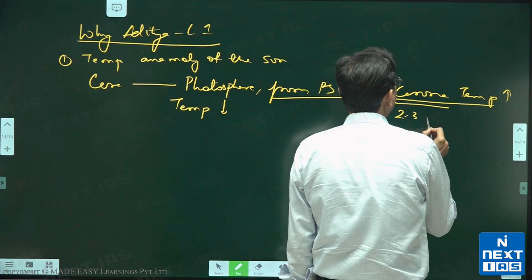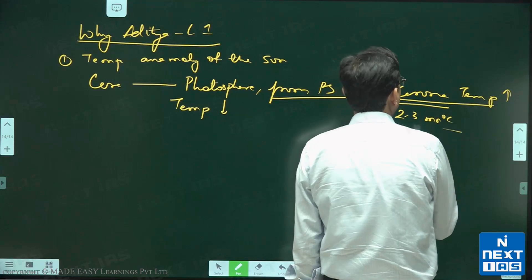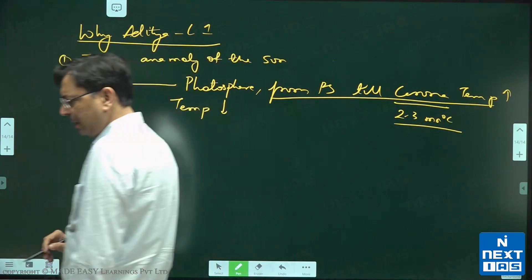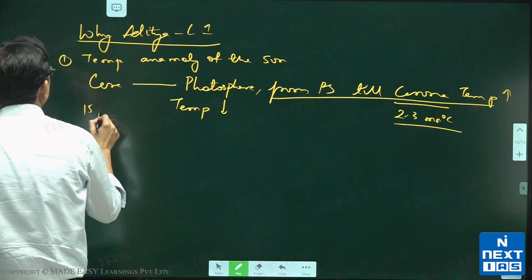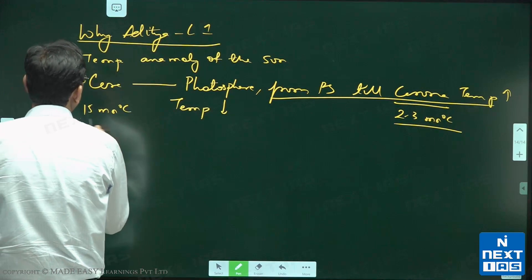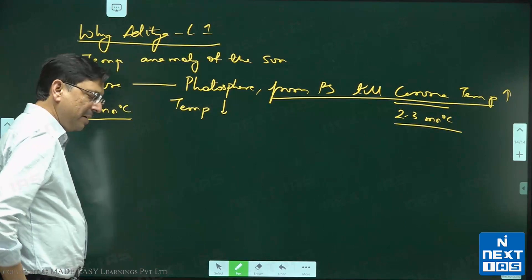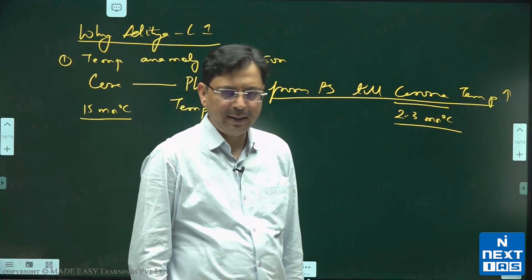The temperature is 2 to 3 million degrees Celsius in corona, while here in the core the temperature is 15 million degrees Celsius.